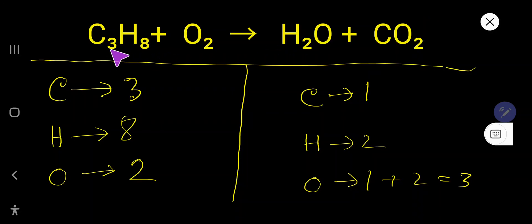How to balance C3H8 plus O2 that produce H2O plus CO2. In the right hand side, the number of carbon is 1, the number of hydrogen is 2, the number of oxygen here 1, here 2. 1 plus 2, 3.